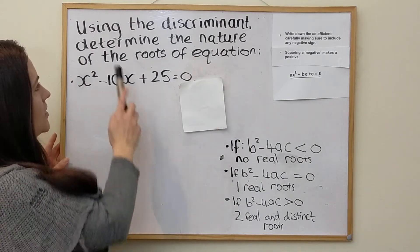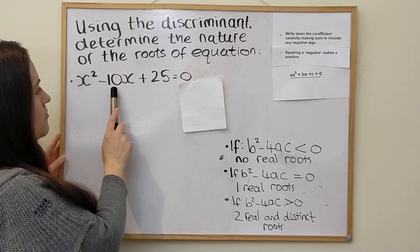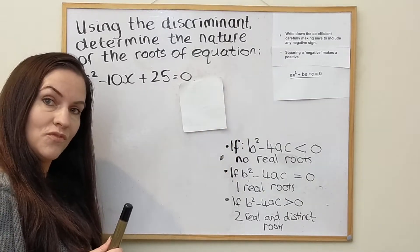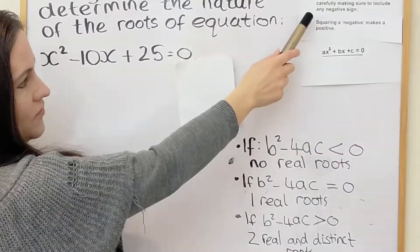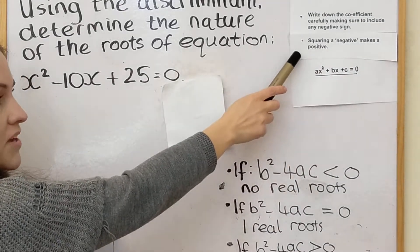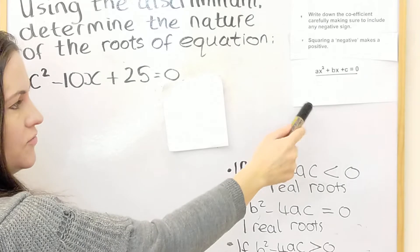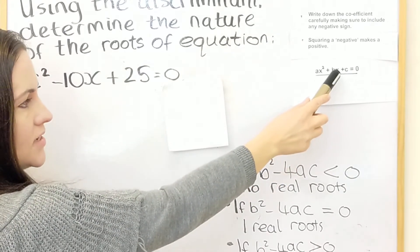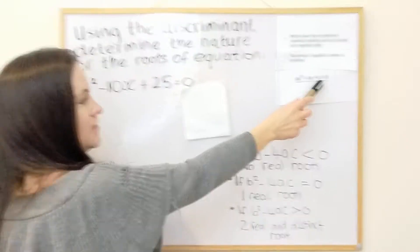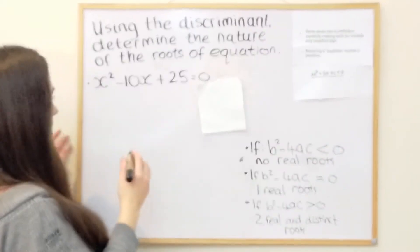So we have a question: using the discriminant, determine the nature of the roots of the equation x squared minus 10x plus 25 equals zero. We're advised to write down each coefficient carefully, making sure to include any negative signs. We need to be mindful that squaring a negative makes a positive. The format is ax squared plus bx plus c equals zero, so a is the first term, b is the middle term, and c is the constant.